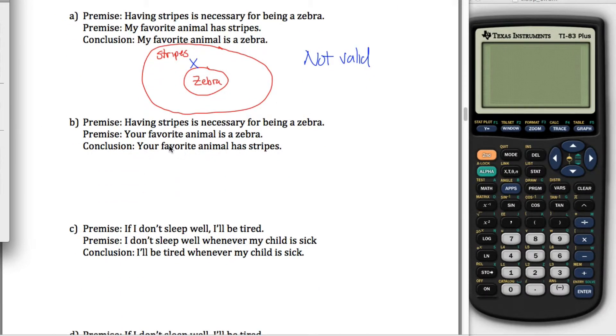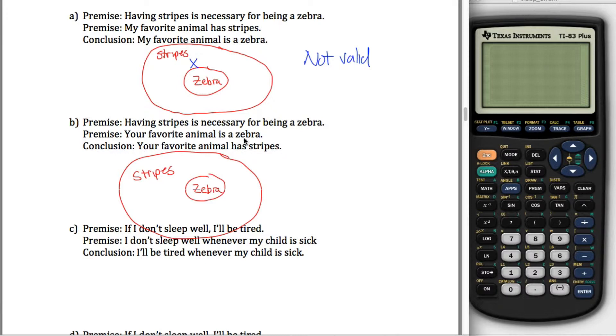Second one kind of flips it around a little bit. Same picture, having stripes is necessary for being a zebra. Okay, so if these are all the zebras, I want this entire circle to fall within the stripes circle. Because all zebras have stripes. Premise, your favorite animal is a zebra. So your favorite animal falls in here, inside the zebra circle, because it is a zebra. Up here I was just inside the stripes circle, not necessarily inside the zebra circle, maybe I was, maybe I wasn't, we didn't know. Your favorite animal is a zebra, it's inside the zebra circle. So the conclusion that your favorite animal has stripes is valid. Why is that valid? Because all zebras have stripes. This X right here is inside the stripe circle. It's just in a special part of the stripe circle. Valid.